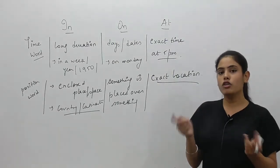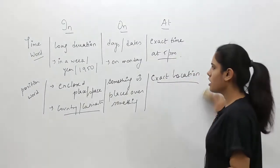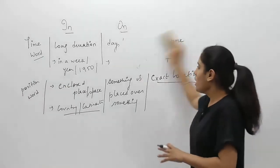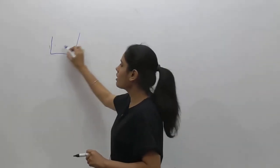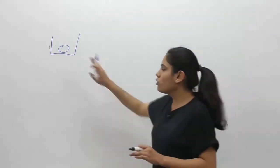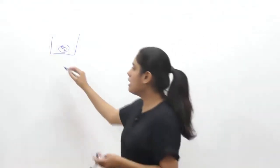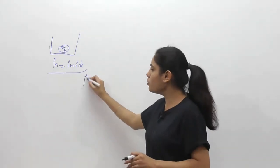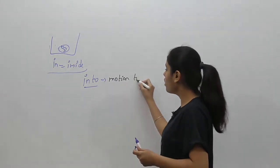Now, when we combine two prepositions — in and to — we get 'into', a compound preposition. 'In' means inside. For example, if a ball is already placed inside a box or bucket, we say 'the ball is in the box.' 'In' is equivalent to 'inside'. But 'into' tells us about motion towards inside — movement from outer space to some inner space.